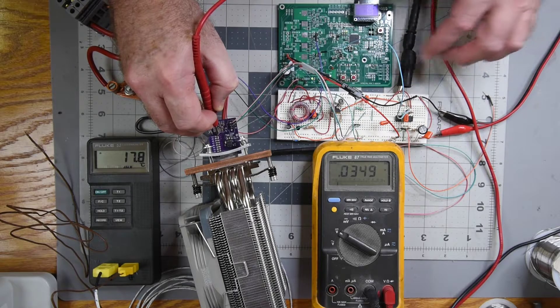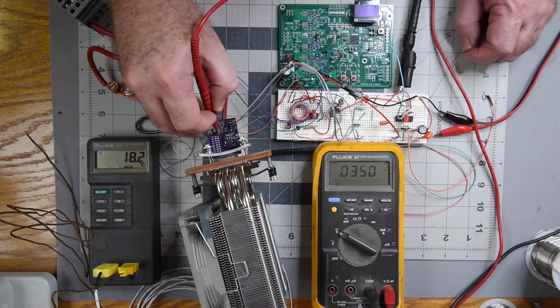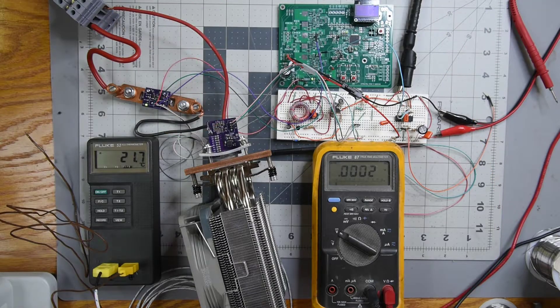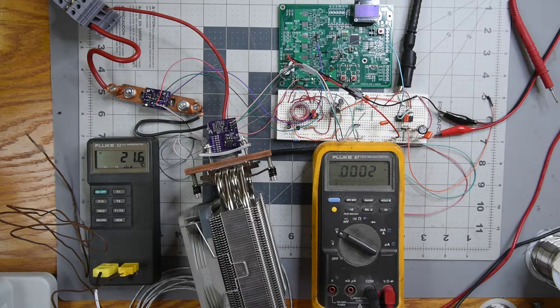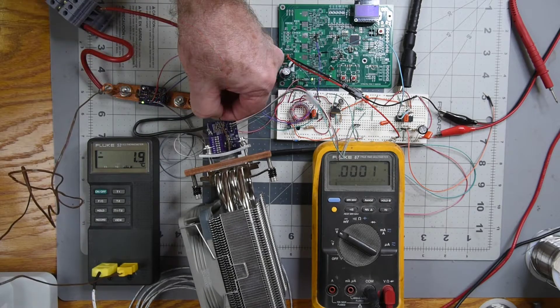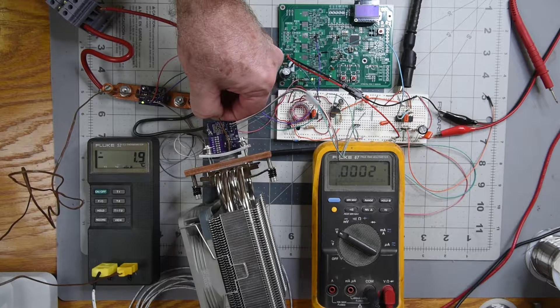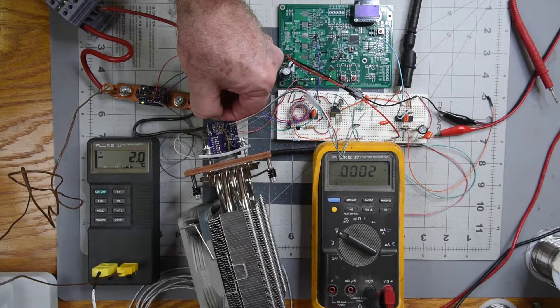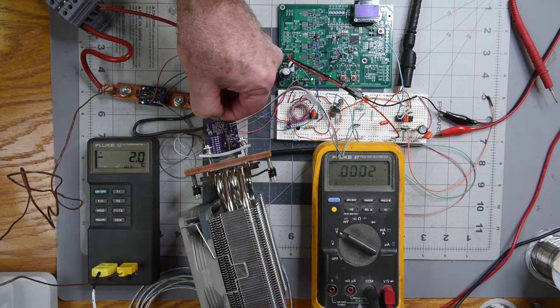This is the 100 watt test. The heat sink is doing a really good job. The drain lead right at the MOSFET case is about 2 degrees centigrade hotter than the case, so temperature difference drain lead to ambient a little under 24 degrees centigrade.